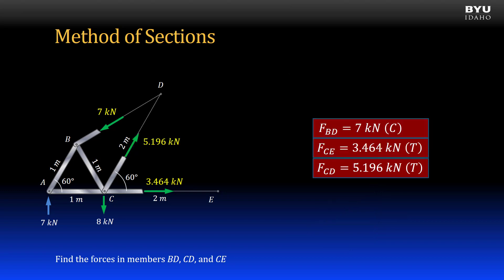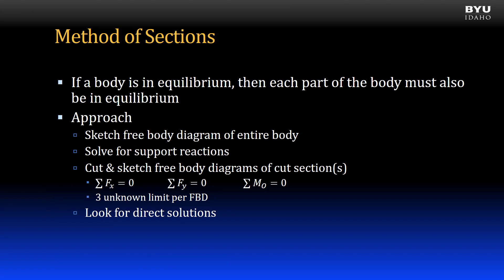Now we have all three of our member forces on the cut. If more member forces were needed, we could make another cut and repeat the process. In summary, we use the method of sections when we want to find only a few member forces in our truss. It is usually much quicker than using the method of joints.